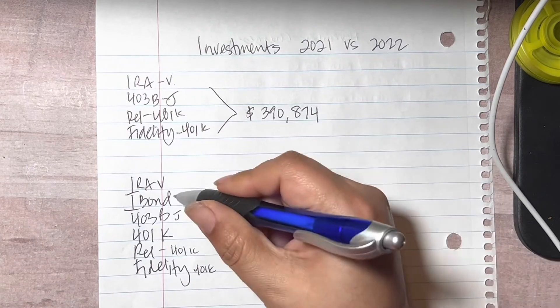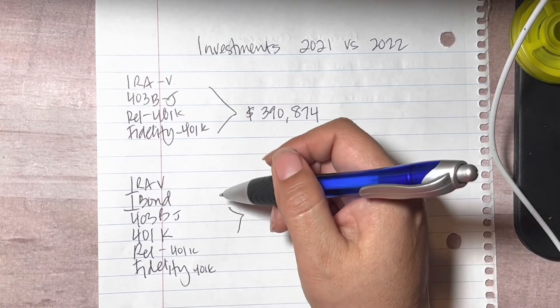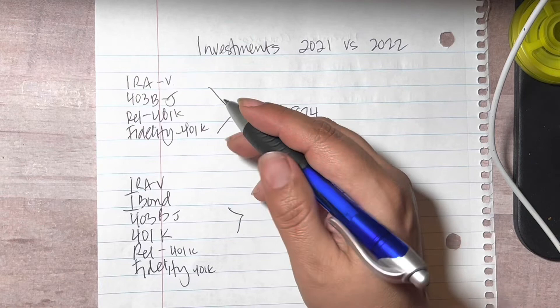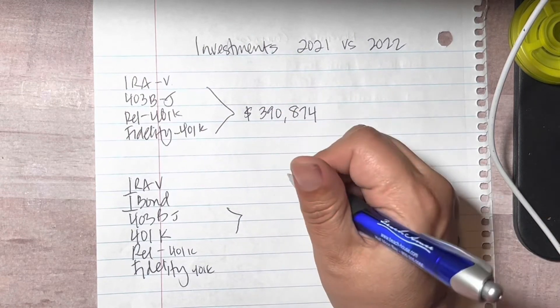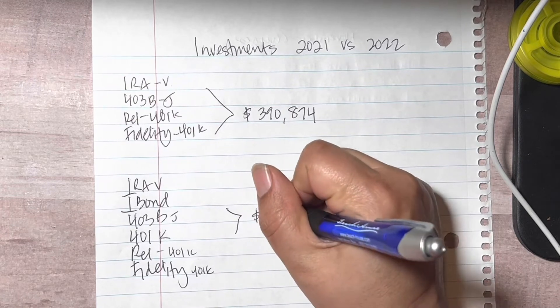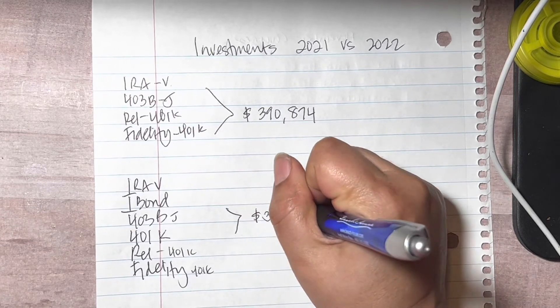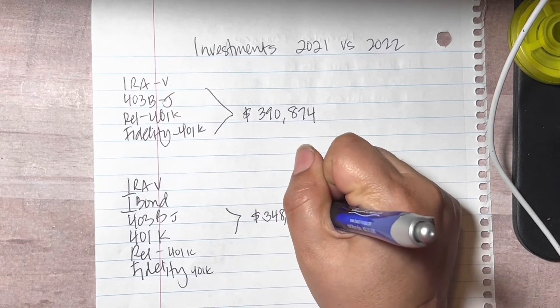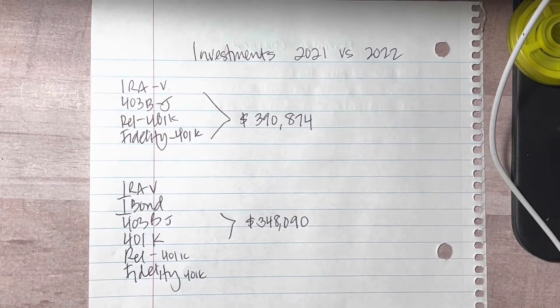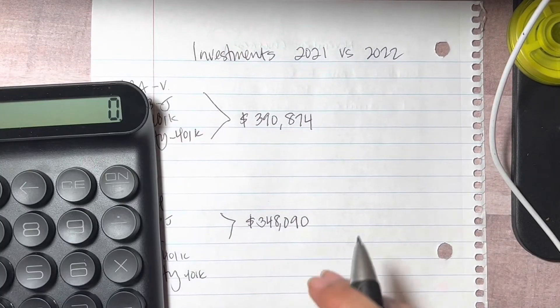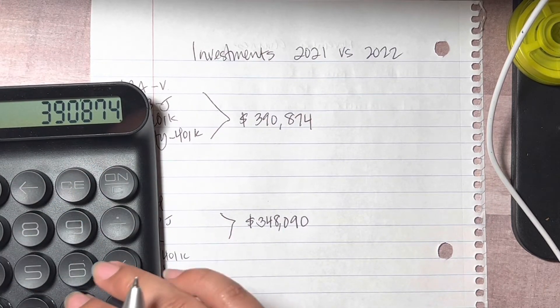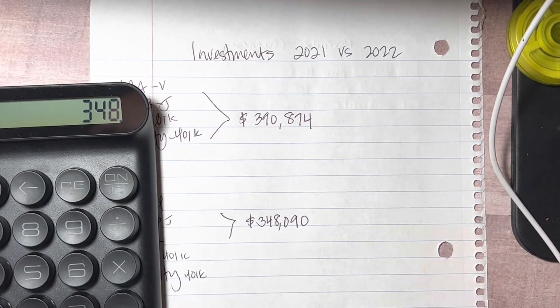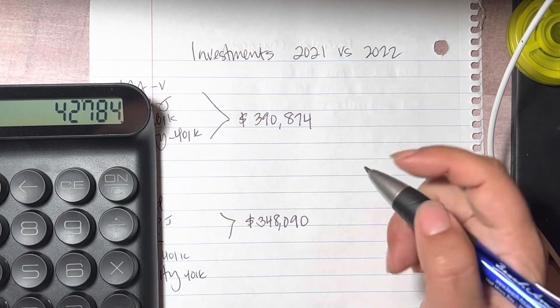So all in all, two more additional ones. But because the stock market just was crazy this year and we lost a lot of money, the new total at the end of November was $348,090. She's blowing into my hair, and like I told you I'm not editing these videos.